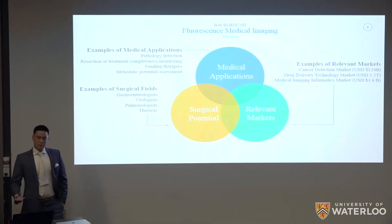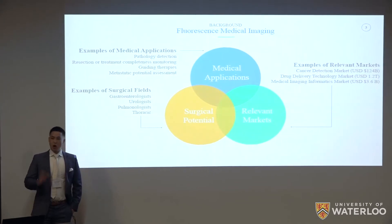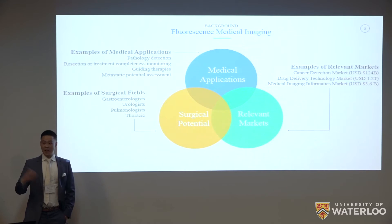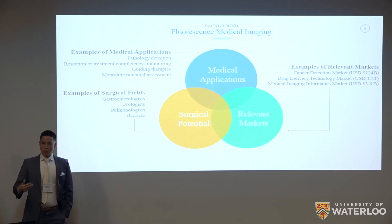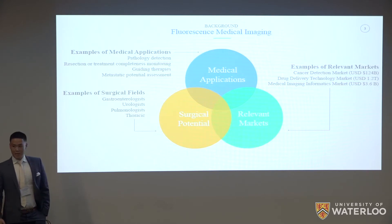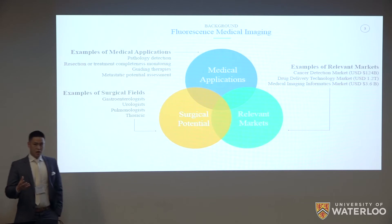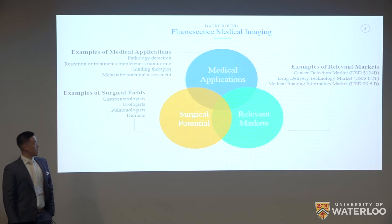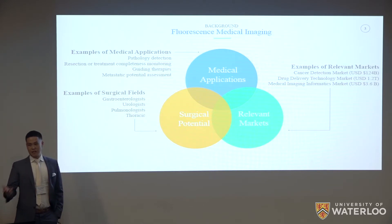Fluorescence medical imaging is both an old and a new science. It's long been known that certain molecules can absorb light at one wavelength and emit it at another. Nanotechnology has allowed us to manipulate these special molecules for purposes such as medical diagnosis and treatment. It differs from radiology in that radiology is more for deep tissue analysis, whereas fluorescent medical imaging is for surface phenomena, making it useful for pathology, detection, and guiding therapies.